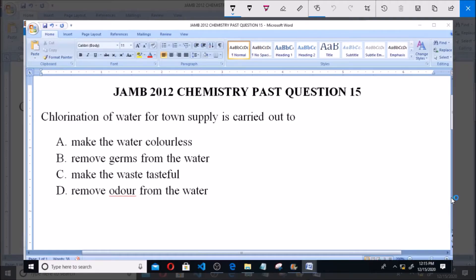Hello, good day, and welcome. I'll be answering JAMB 2012 Chemistry past question 15. Chlorination of water for town supply is carried out to: A. make the water colorless, B. remove germs from the water, C. make the water tasteful, and D. remove odor from the water. Now, the purpose